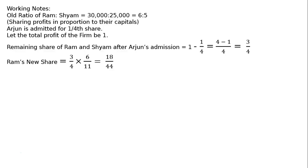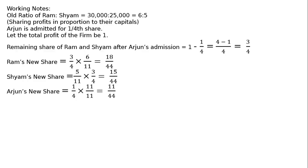Ram's new share is 3/4 multiplied by 6/11, that is 18/44. Siam's new share is 5/11 multiplied by 3/4, that is 15/44. Arjun's new share is 11/44. Therefore the new ratio of Ram to Siam to Arjun is equal to 18 to 15 to 11.